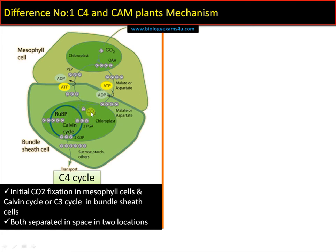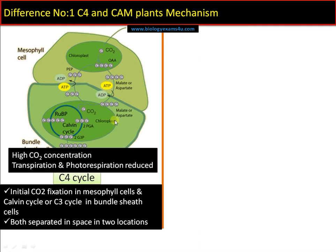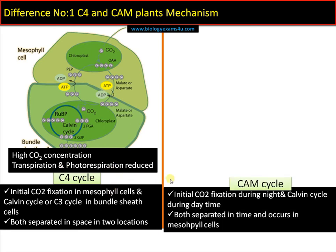In the bundle sheath cells, malate is decarboxylated, carbon dioxide is released, and that will enter the Calvin cycle. Phosphoenolpyruvate is then regenerated. Therefore, initial carbon dioxide fixation occurs in mesophyll cells, whereas Calvin cycle takes place inside bundle sheath cells — both are separated in space. This ensures a continuous supply of carbon dioxide inside bundle sheath cells, where RuBisCO will not be inhibited by oxygen, so high concentration of carbon dioxide is always maintained, ensuring minimum or complete absence of photorespiration.